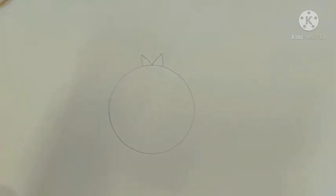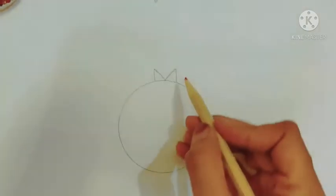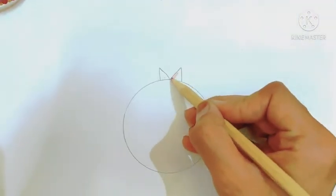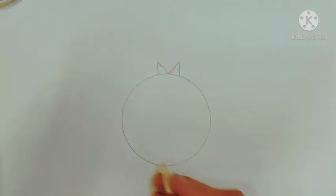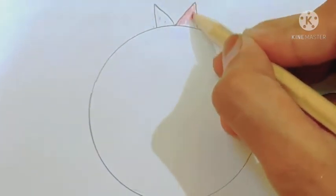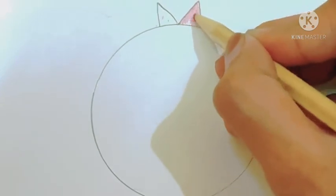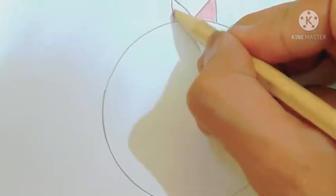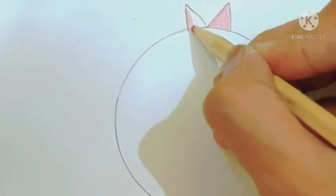Now we will color in this pomegranate. So all of you take your red color and color it. You have to color here also, here also and in this big circle also. And you have to color it very carefully. You don't have to leave any white part.